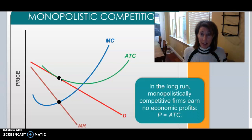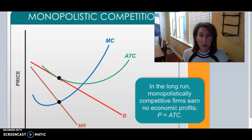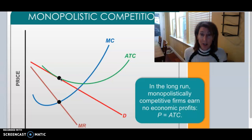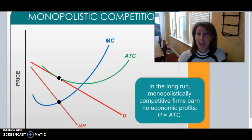Your book and the posted slides go into this more in depth. The key here is: combinations of characteristics from perfect competition and monopoly, zero profits in the long run, more realistic, advertising can happen, and a relatively flat demand curve.